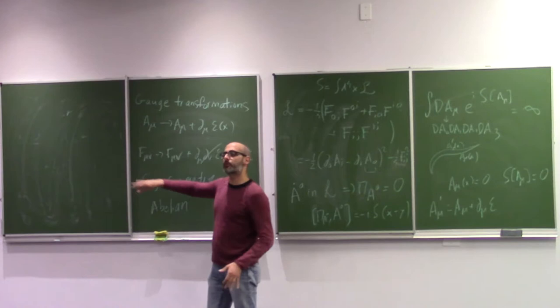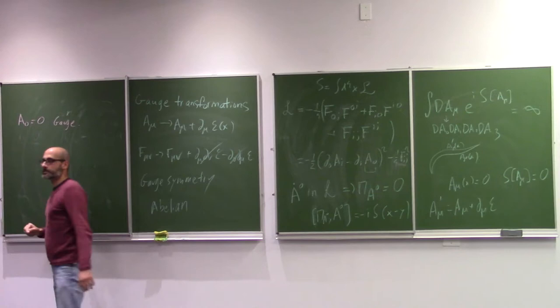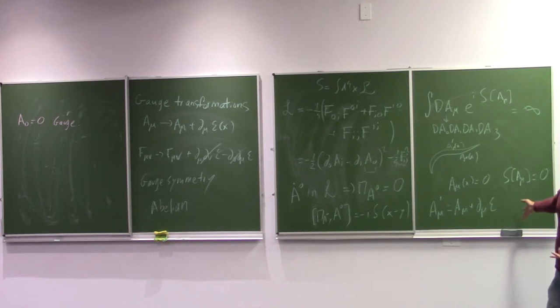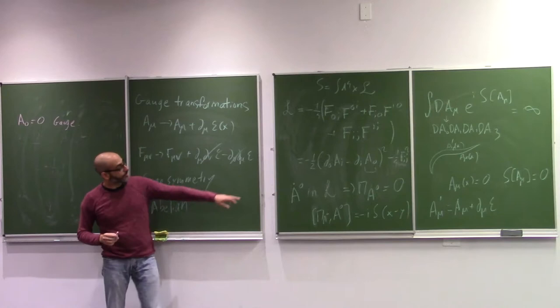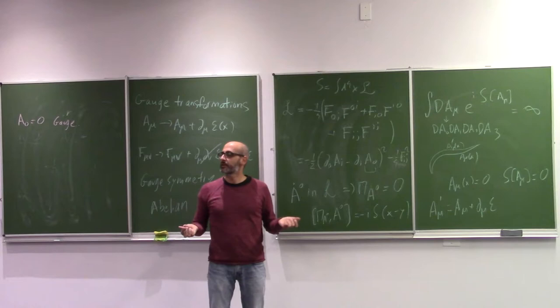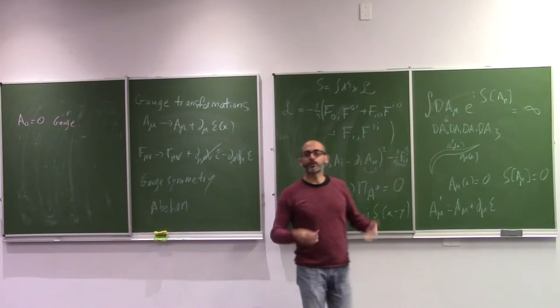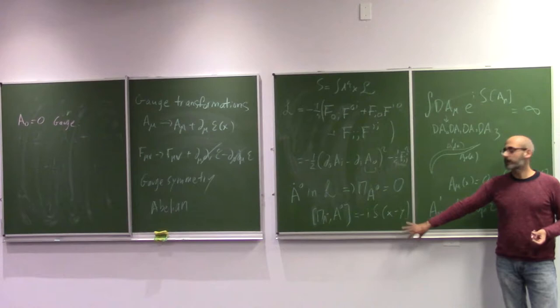One simple gauge choice is the so-called A_0 = 0 gauge: you set the A_0 component to zero by hand. That definitely fixes some of the gauge symmetry. There's a nice advantage here because it also resolves the quantization problem — if you put A_0 = 0, the problematic term is just not there anymore. You don't have to worry about the conjugate momentum to A_0, and then you can proceed with quantization happily, without ever needing that commutation relation.